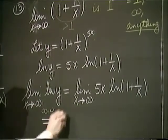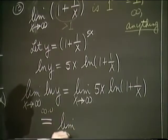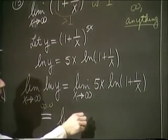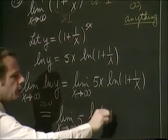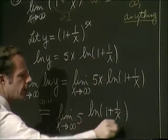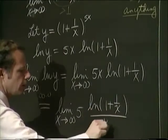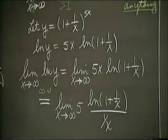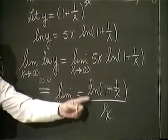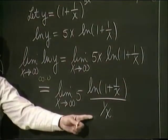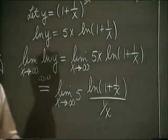We've done one a little bit like this last time. We found that it was most efficient to move the x down. We could move the 5 outside as well, if you wish. And the reason, again, is because we have a 0 over 0 form. And we can apply L'Hôpital's rule. So let's do that over here.